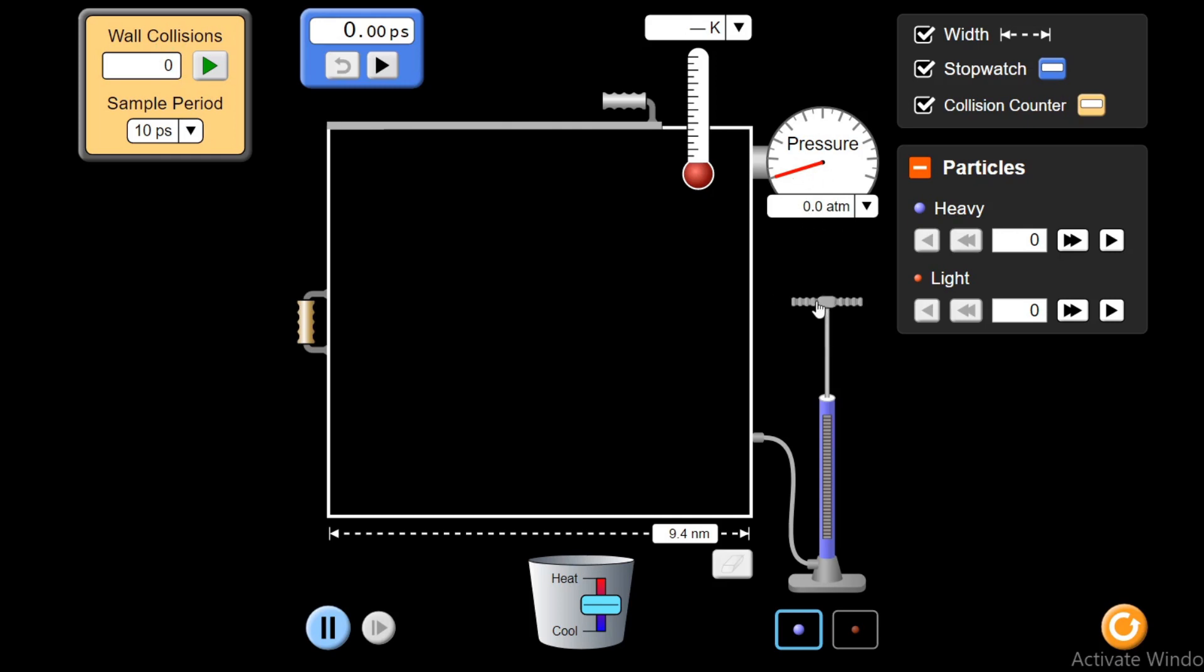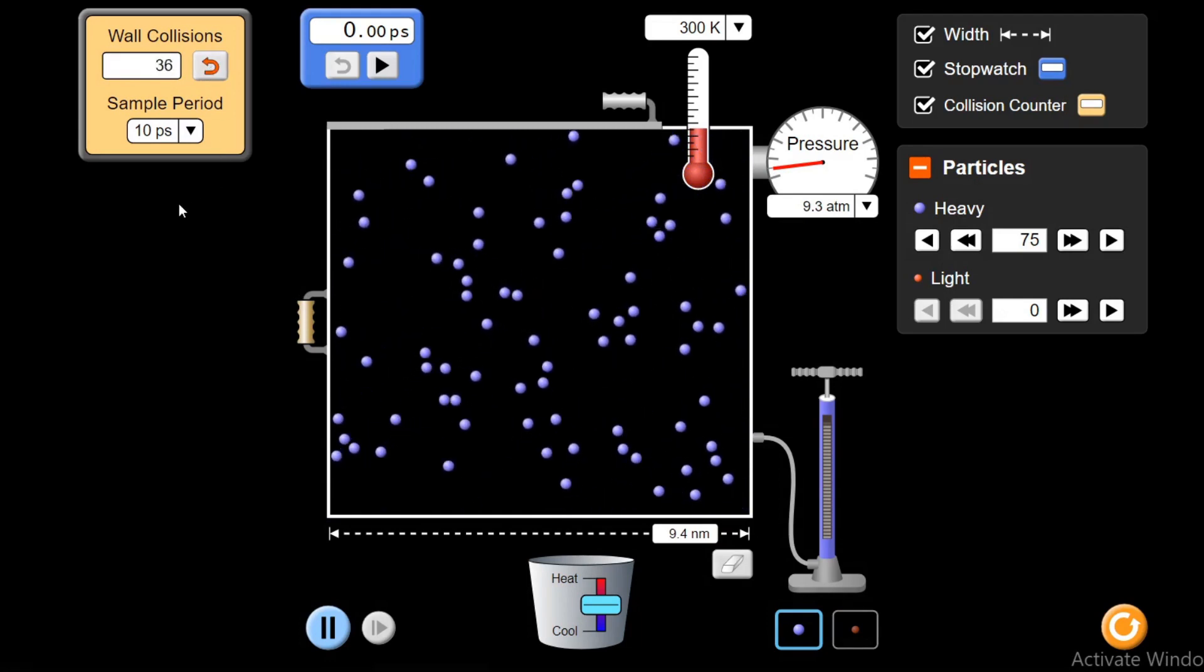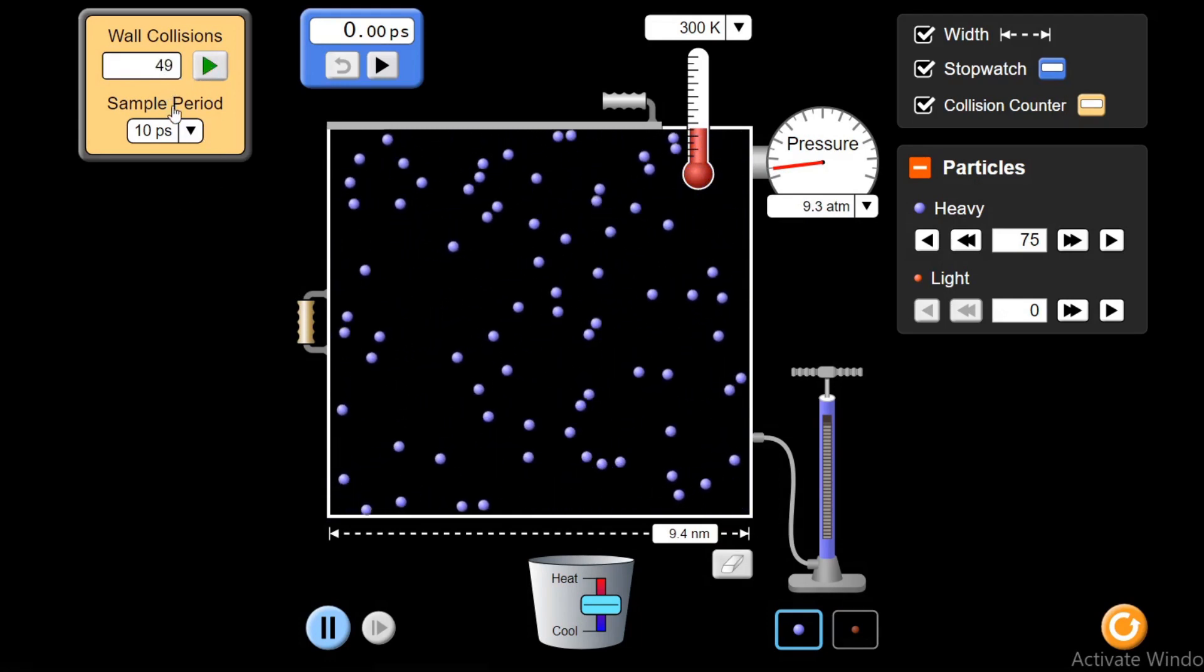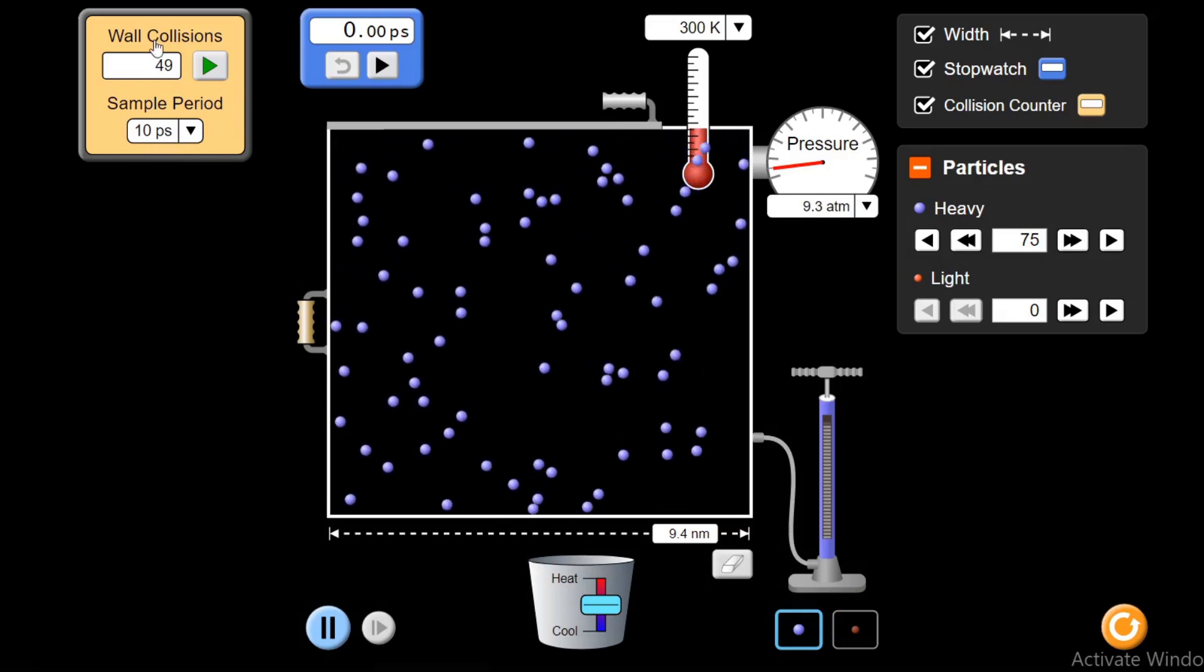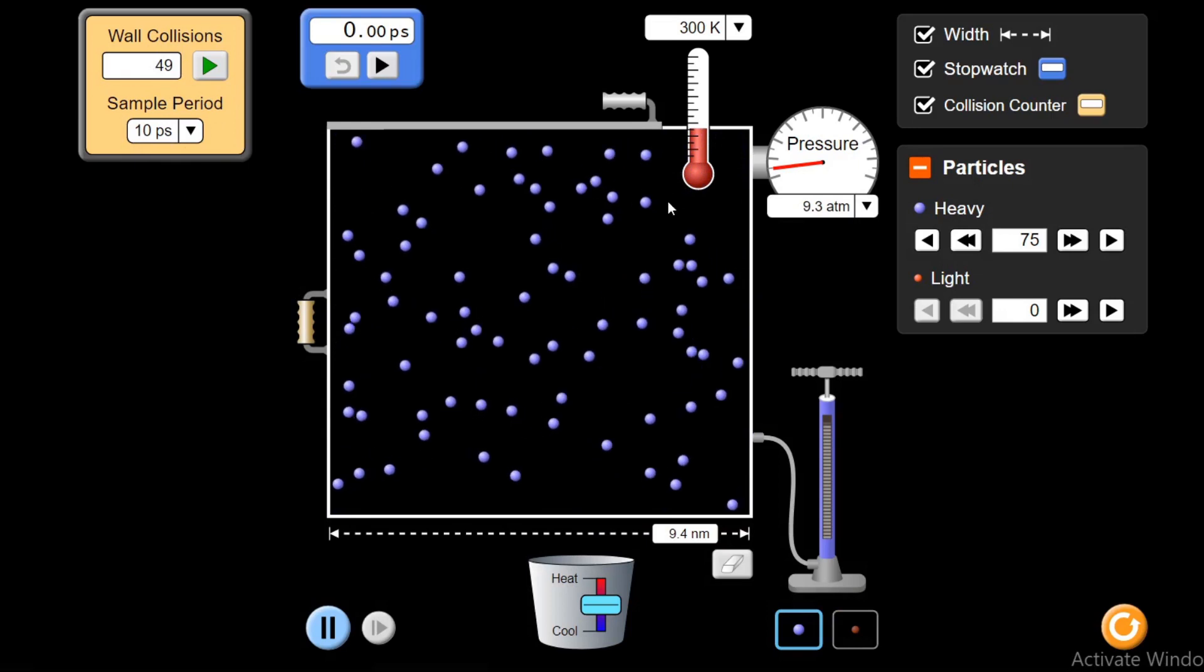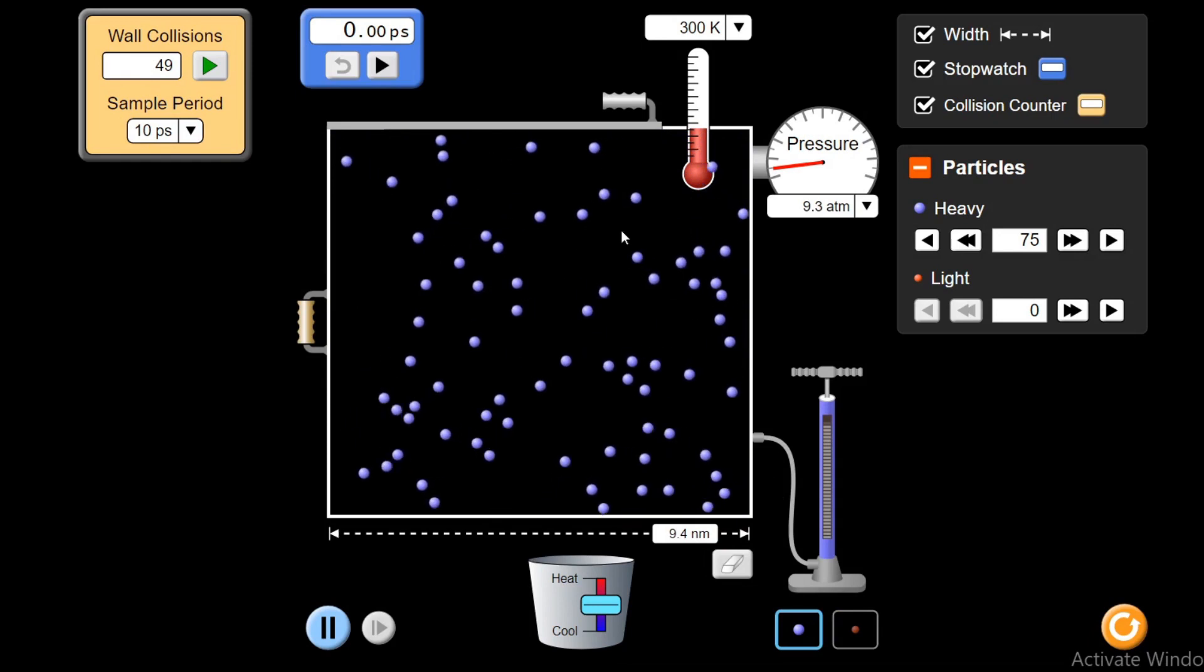Now, let me introduce the molecules here. I have introduced 75 molecules. You can see the reading here. As I have introduced 75 molecules, the pressure has increased to 9.3 atm. And if I see the number of collisions with the walls, let's use this tool. It is saying that there are 49 collisions in 10 picosecond period. Due to these 49 collisions per 10 picosecond, I am getting 9.3 atmospheric pressure because of these blue molecules.